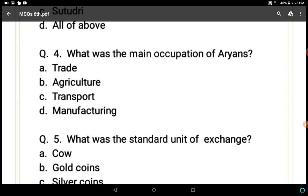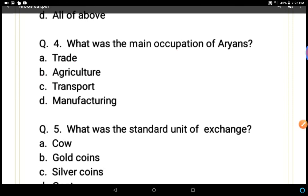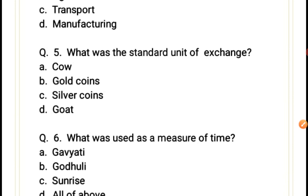Question 4: What was the main occupation of the Aryans? Options: trade, agriculture, transport, or manufacturing. The Aryans had a little trade but in a very limited area. The main profession or occupation of the Aryans was agriculture. So agriculture is the correct answer.